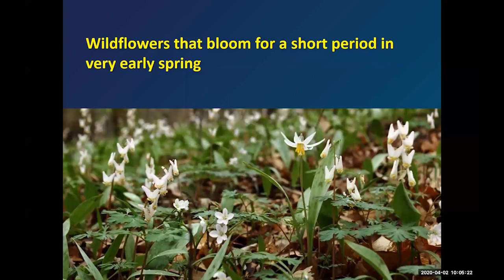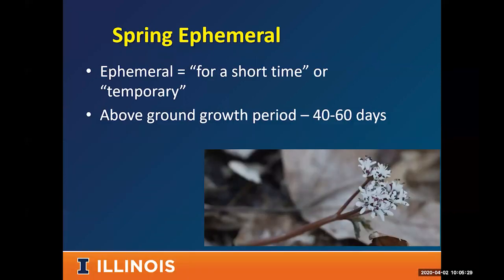You may have heard these called spring ephemerals — another common name for early spring wildflowers. Ephemeral simply means for a short time or temporary. These wildflowers are only above ground for a short period in early spring, typically 40 to 60 days of above-ground growth.